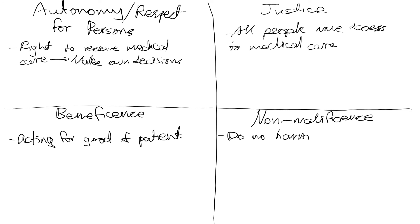As a quick recap: the first principle, autonomy and respect for persons, denotes that patients have rights and the right to make their own decisions regarding their treatment. Justice relates to access to medical care, which can be affected by geography or language barriers. Beneficence relates to acting for the good of the patient, ensuring any procedure has beneficial worth to their health. And non-maleficence means ensuring the patient does not experience harm — if a procedure must be done, the benefits should always outweigh the harm so the patient can have a good recovery. Those are the four principles of medical ethics.